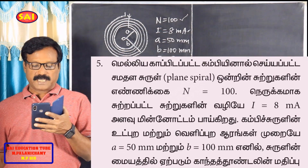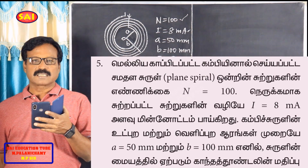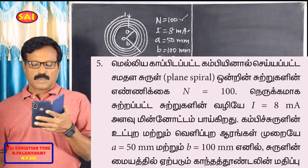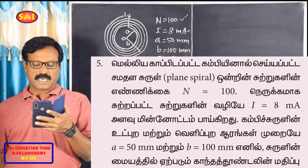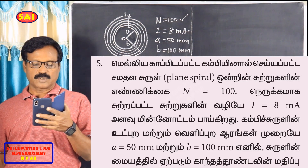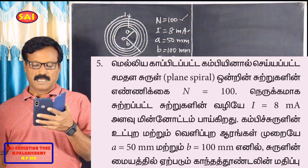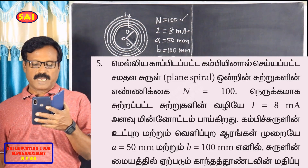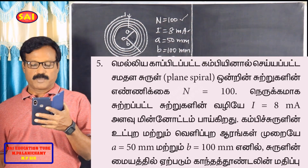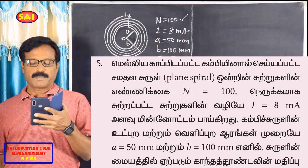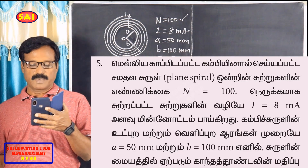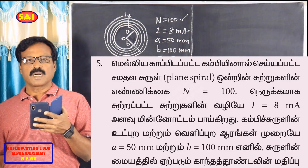A thin insulated wire wound into a spiral — the number of turns N is equal to 100. Current I is equal to 8 mA. The inner radius a is equal to 50 mm and outer radius b is equal to 100 mm. We need to find the magnetic field at the centre of the spiral.